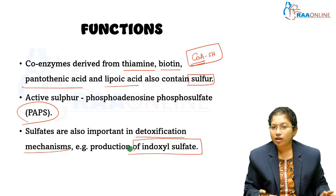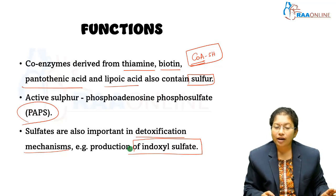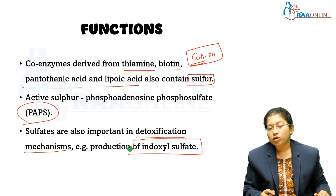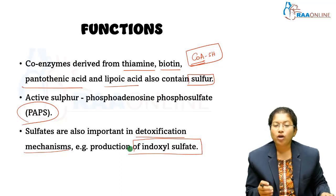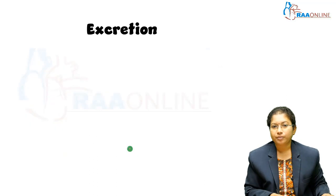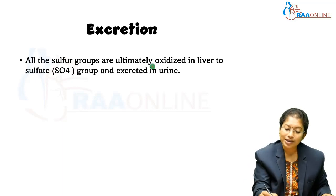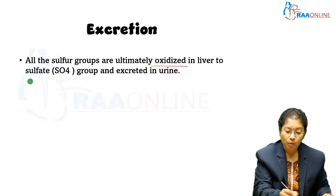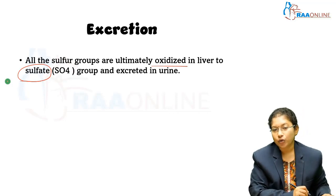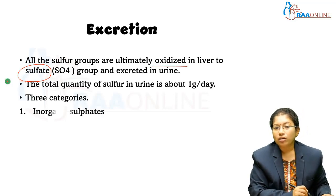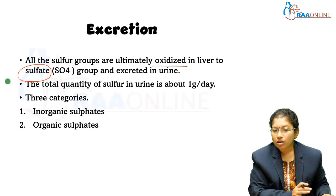The overall functions of sulphur are to provide disulphide bridges, help in the formation of mucopolysaccharides and keratin, and assist in the function of coenzymes. Regarding excretion, all sulphur groups are oxidised to sulphate and excreted in urine. There are three categories: inorganic sulphates, organic sulphates, and neutral sulphates.